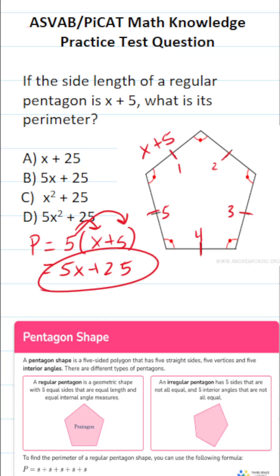In other words, the perimeter of this regular pentagon is 5X plus 25, which is answer choice B.